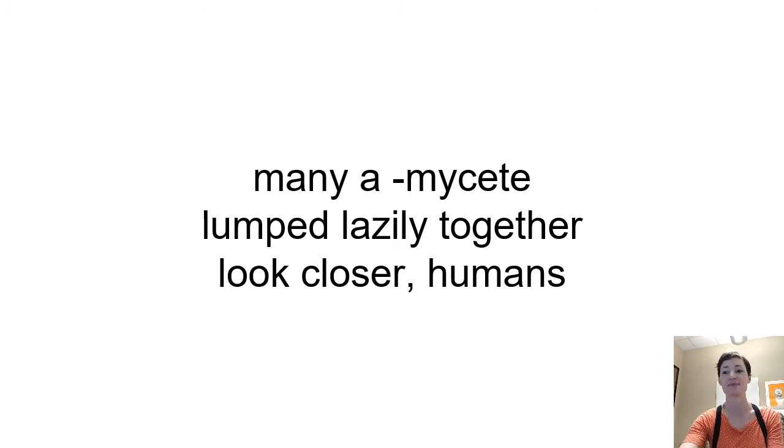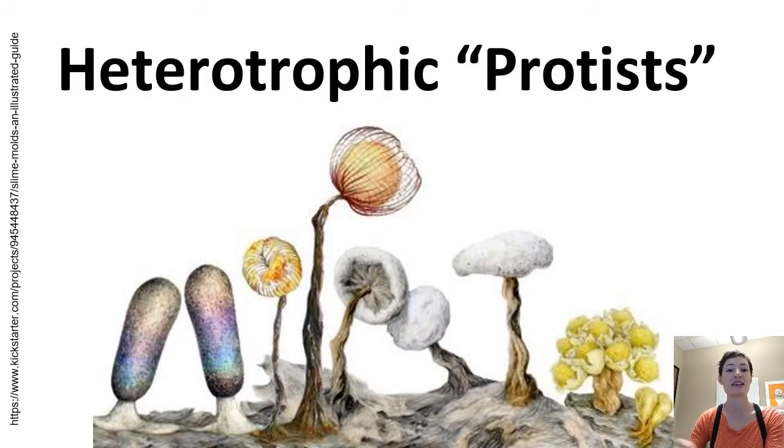So these are our heterotrophic protists. Remember that protist isn't a real group - that's most of the tree of life for eukaryotes that we know of would have belonged to this group of protists. Many of them are multicellular and there's not a good way to group them together because they're not actually related. This image that you're seeing here is a really beautiful illustration of the diversity of slime molds.